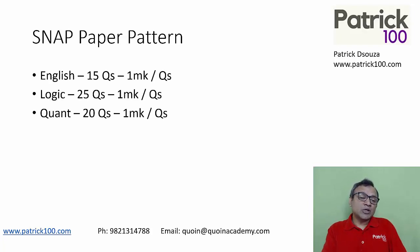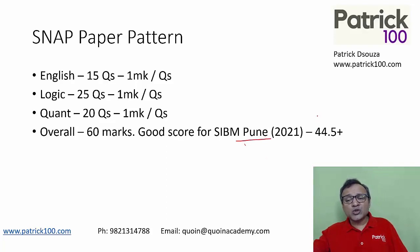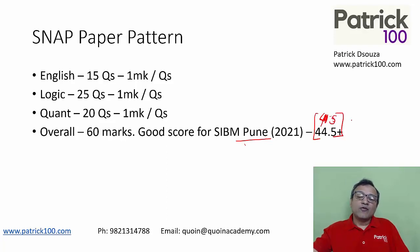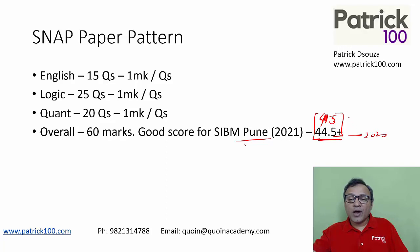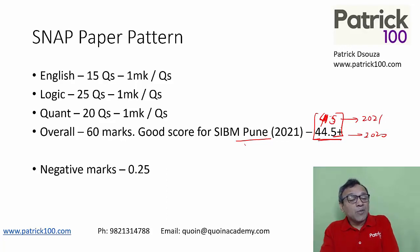We have 15, 25, and 20 questions in SNAP — in total 60 questions — with no sectional cutoff. Questions are normally easy, so overall 60 marks. For SIBM Pune, the cutoff has varied from 40.5 to 41.5 to 44.5 over the last two years. That can change based on difficulty level — in 2020 the cutoff was 44.5, and in 2021 it was 41.5 because the paper became slightly tougher. The negative marking is 0.25, so be careful and don't mark blindly.